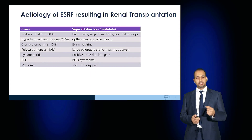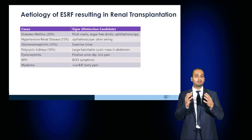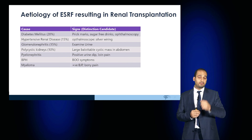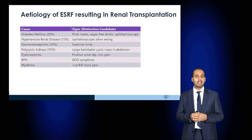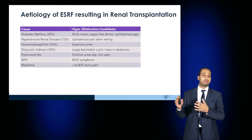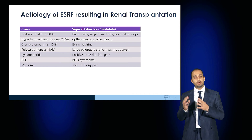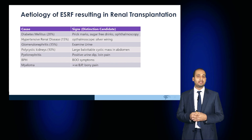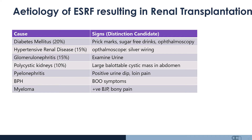Clinically, you can determine whether the patient has diabetes by examining the tips of their fingers for finger prick marks, or by performing ophthalmoscopy looking for signs of diabetic retinopathy. Hypertensive renal disease can be determined by examining vital signs or ophthalmoscopy looking for silver wiring and AV nipping in the retina. Glomerulonephritis may manifest with changes in the urine. Polycystic kidney disease: the patient would have large bilateral ballotable cystic masses in the abdomen. Pyelonephritis can be picked up with a urine dip, loin pain, and patient history. BPH would be picked up with bladder outflow symptoms. And myeloma: you'd expect positive Bence Jones proteins and bony pain.